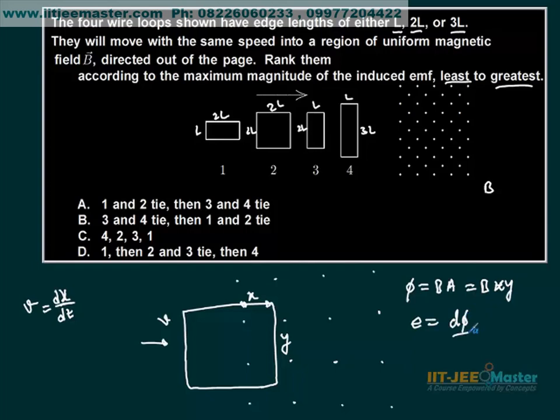And EMF will be d(phi) by dt. This will be minus B dx by dt times y, because the changing variable is x. The changing quantity is only x. The rest - y is fixed, B is fixed.